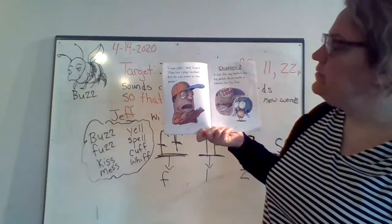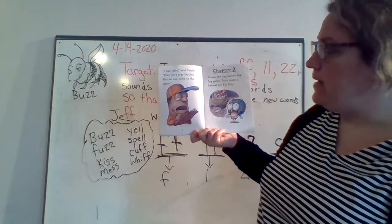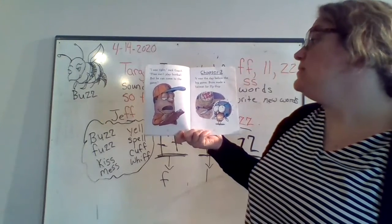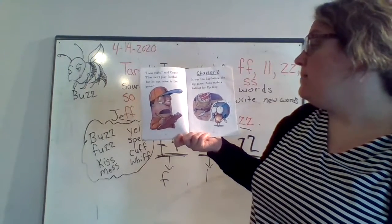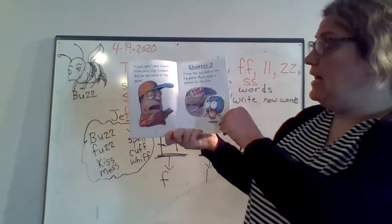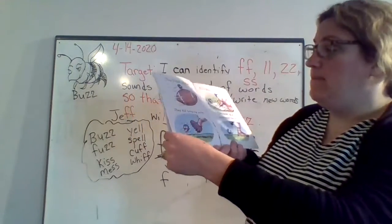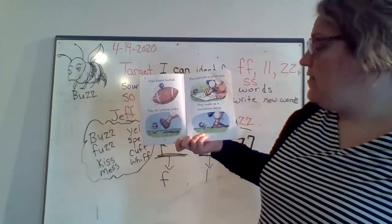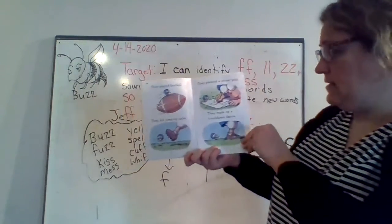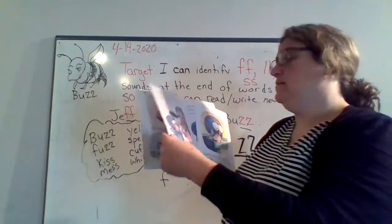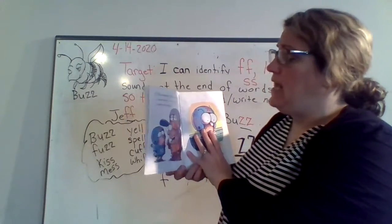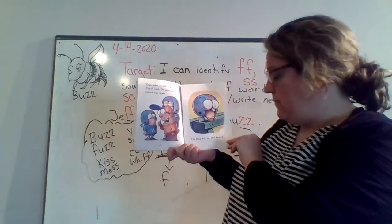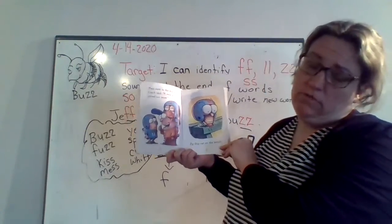I was right, said Coach. Flies can't play football, but he can come to the game. Chapter Two. It was the day before the big game. Buzz made a helmet for Fly Guy. They played football. They did jumping jacks. They planned a secret play. They made a touchdown dance.